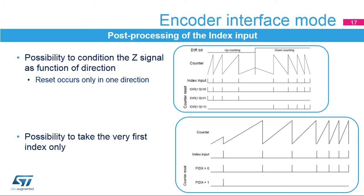The timer unit supports post-processing of the index input. When directional index sensitivity is enabled, the index is active only in a selected counting direction. For example, when I_DIR equals 0 to 1, the index resets the counter during up-counting only. A second post-processing option allows the index to be taken only once: when FIDX equals 1, once the first index has arrived, any subsequent index will be ignored.